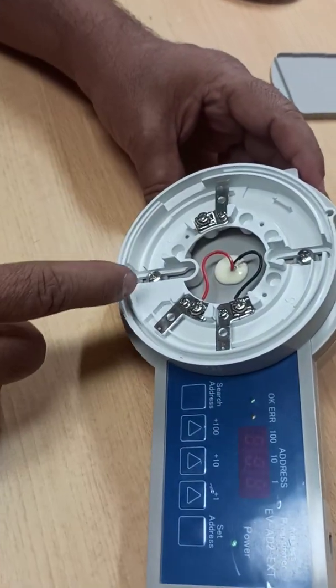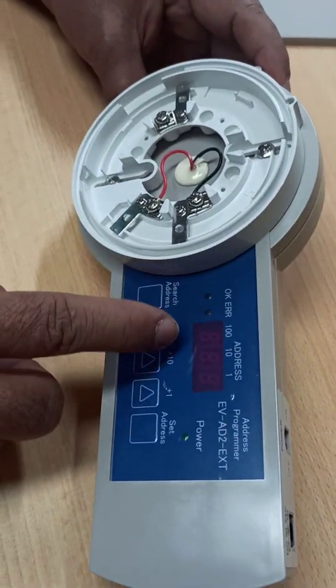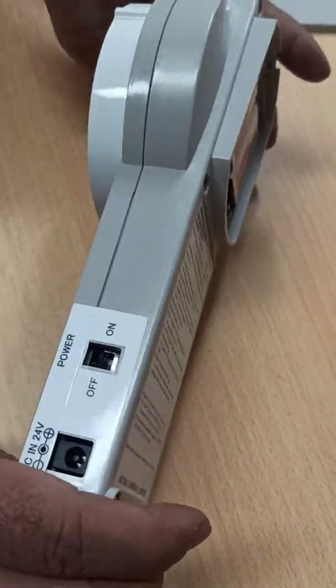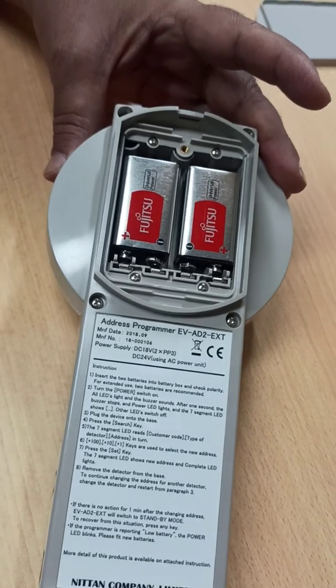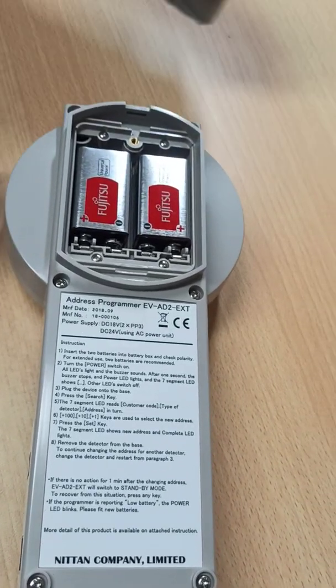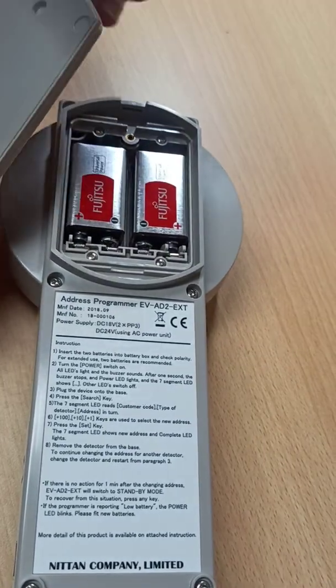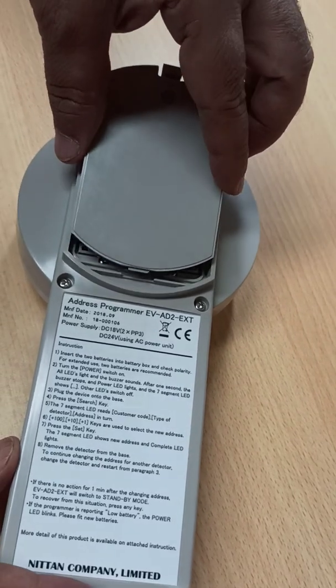This is the base and we have many different parts. Here we have a battery compartment for 9 volt batteries. This is connected in series, it gives 18 volt.